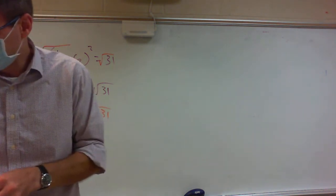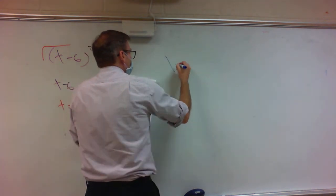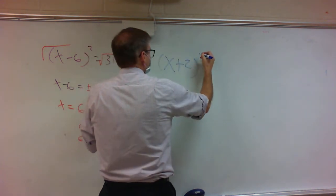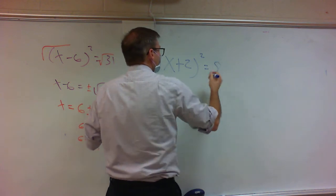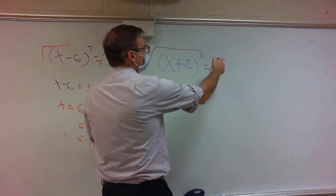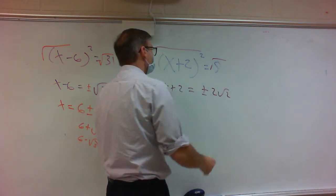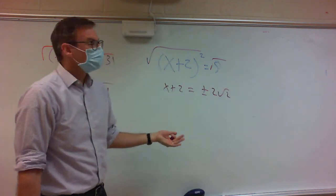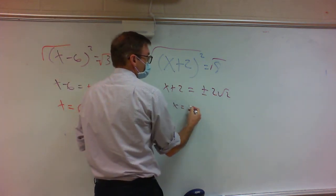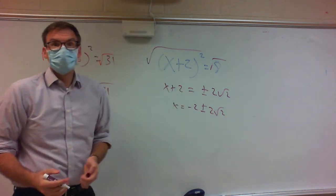Your turn. What if I gave you x plus 2 squared equals 8? Simplify the square root of 8 — that's going to give us 2 square roots of 2. We're not done; I need to get x by itself. Subtract 2 from both sides: x equals negative 2 plus or minus 2 square roots of 2. That's your answer.